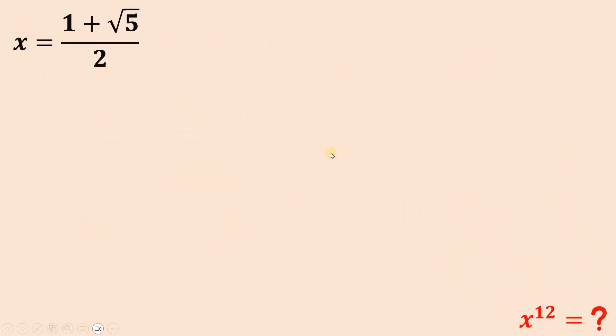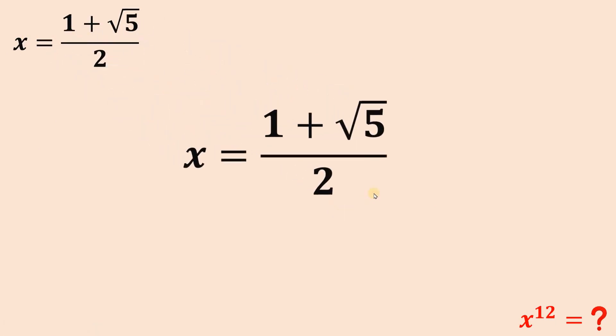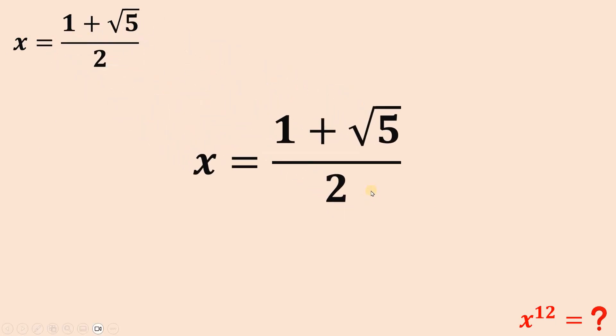So given x equals 1 plus square root of 5 over 2, then our goal is to find the value of x raised to the power of 12. Now the first insight is if we raise both sides by 12, then we're done — we just need to simplify the right hand side of our equation. Of course we get the answer if we do that, but in this video we will do a different method.